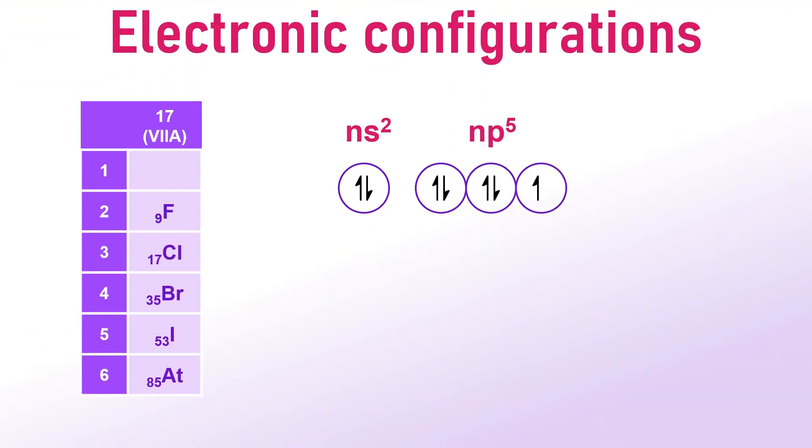To address these questions, let us consider the outer electronic configurations of fluorine and iodine. Both elements belong to the 17th or 7th A group of periodic table. For example, their outer electronic configuration is Ns2Np5, with N being 2 for fluorine and 5 for iodine.